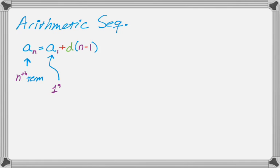And a sub 1 is the first term of the sequence. And then d is the common difference. So you would always add that to get to the next term, or you'd always subtract it to get to the next term, depending if it's positive or negative.